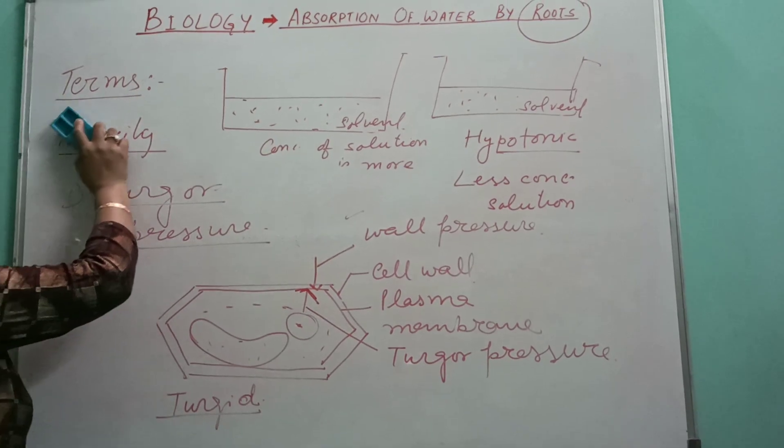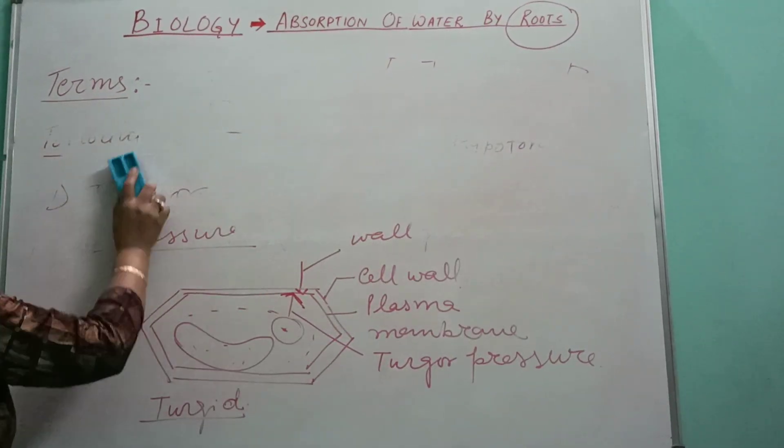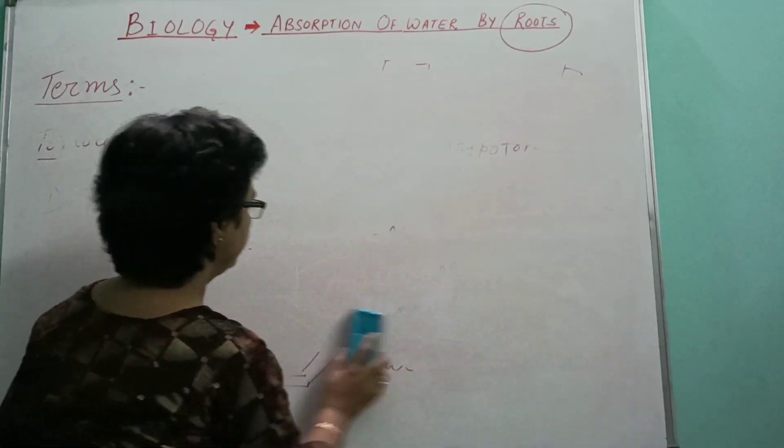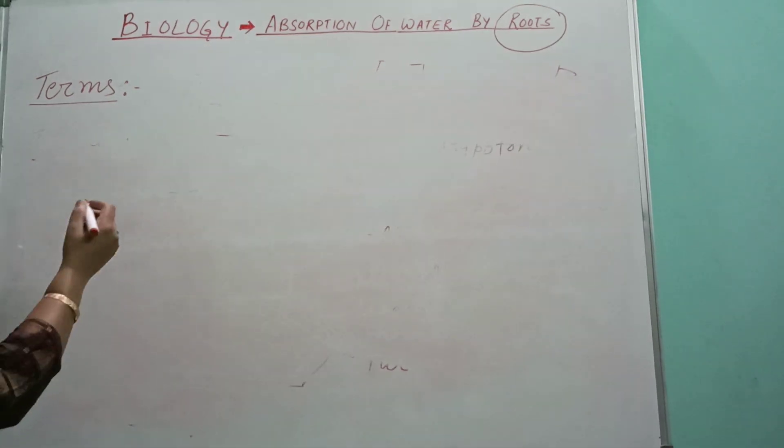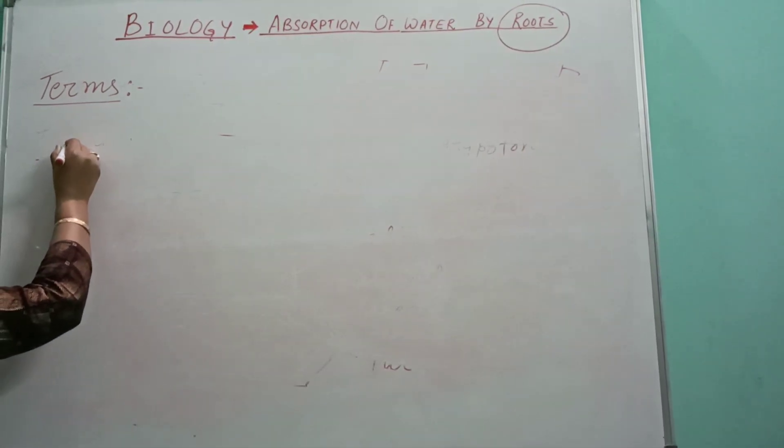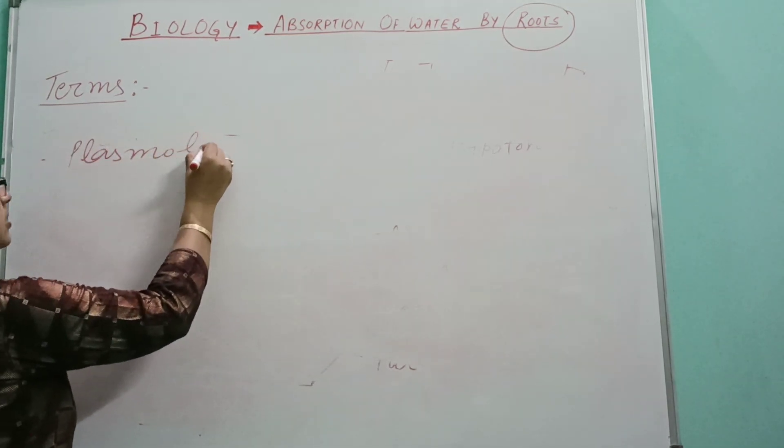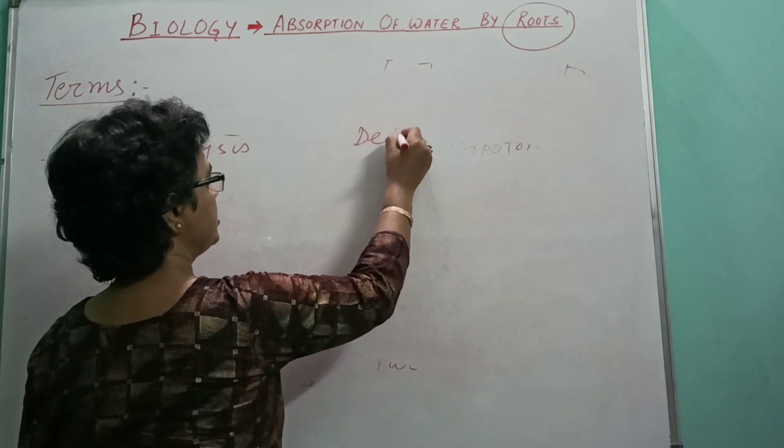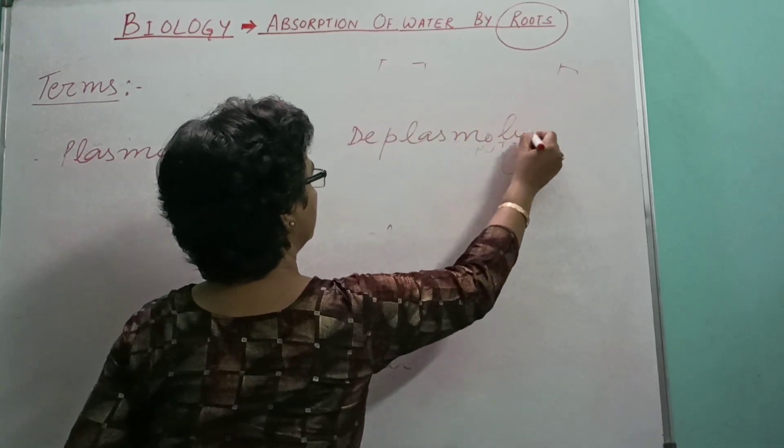As we know that the movement of water is always from lower concentration of solution towards a higher concentration of solution, we have two terms: Number one, plasmolysis, and second one, deplasmolysis.